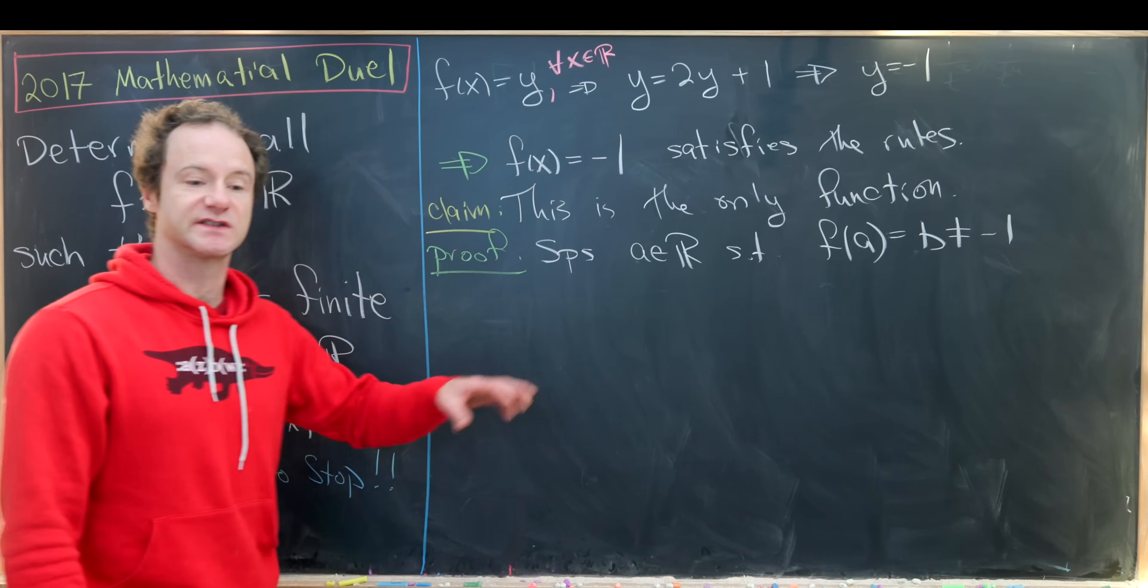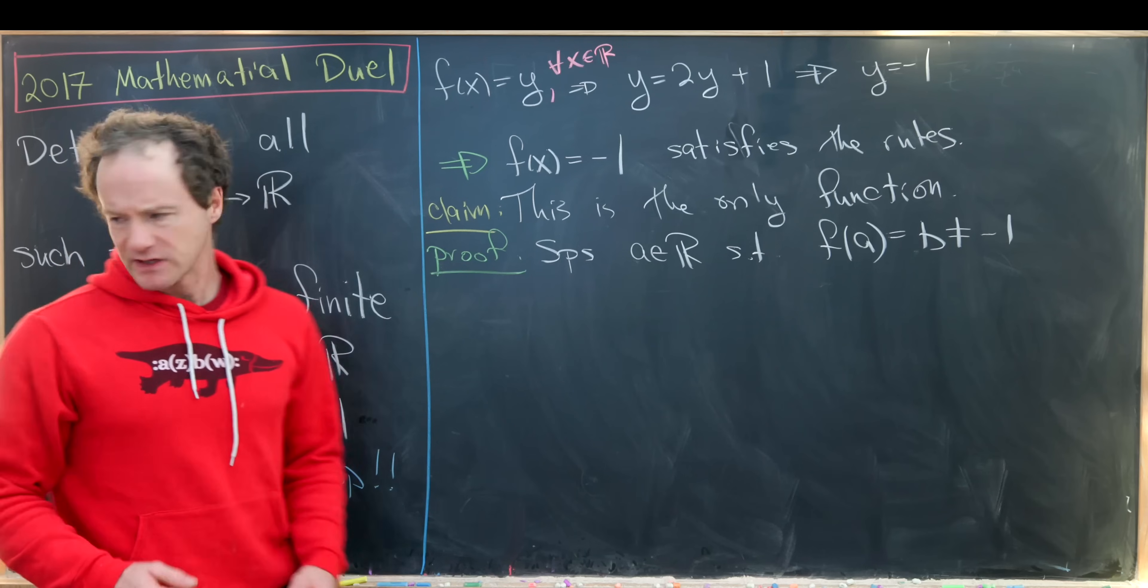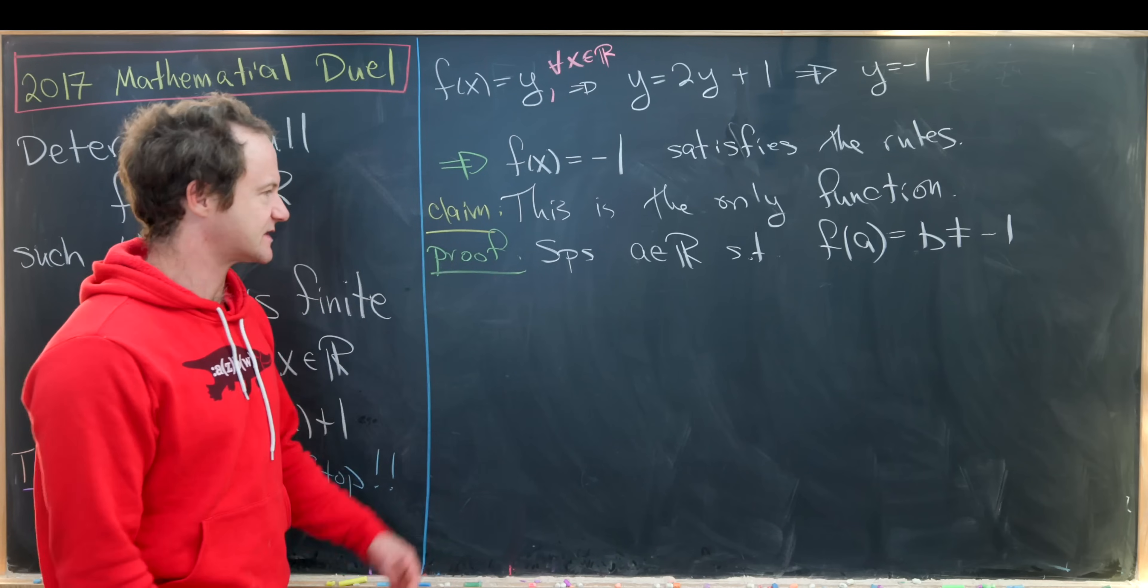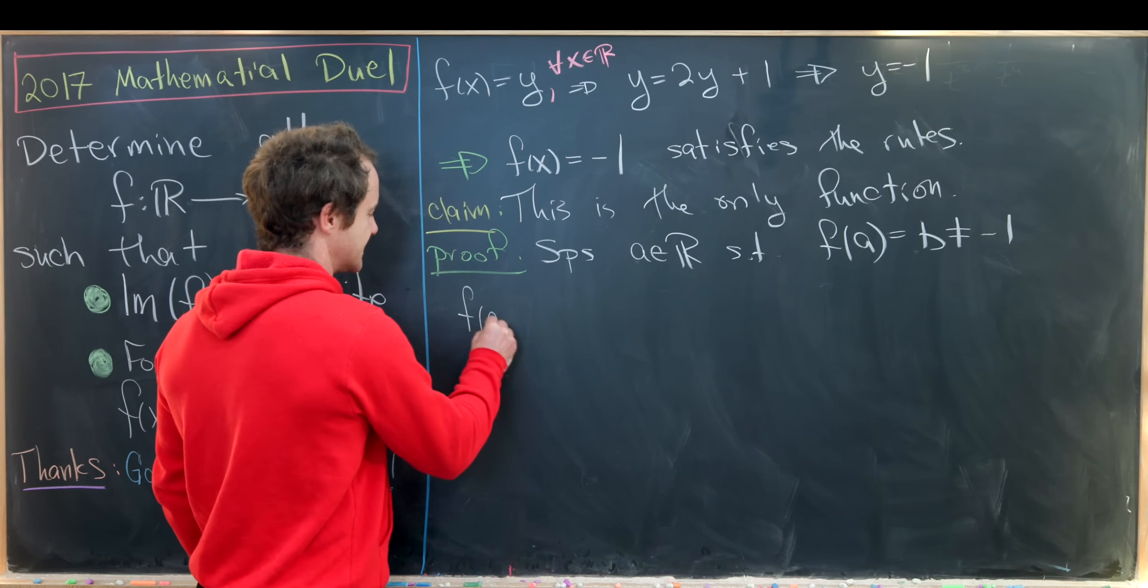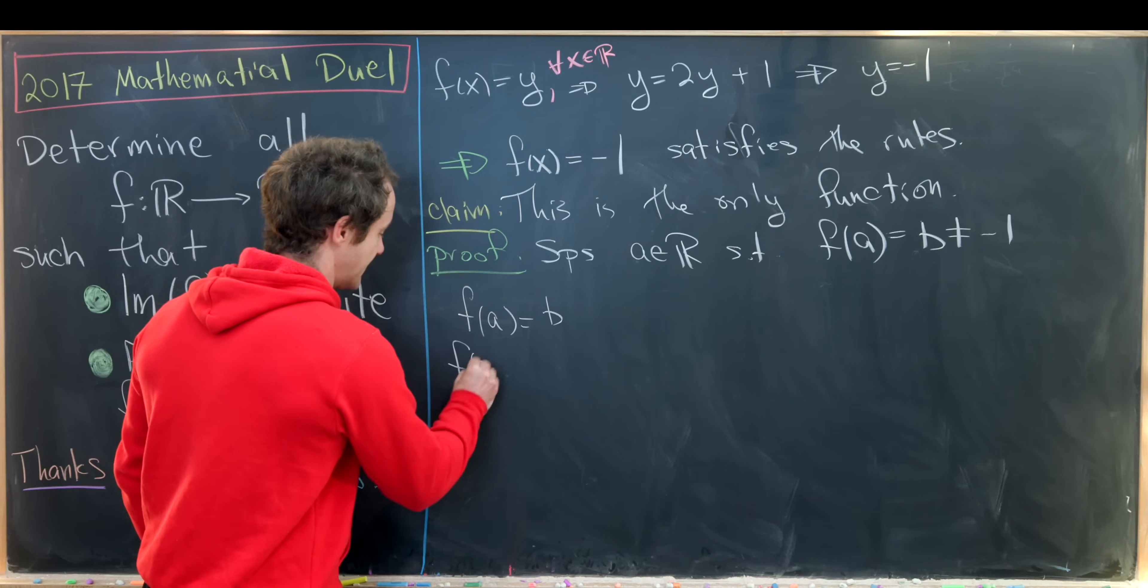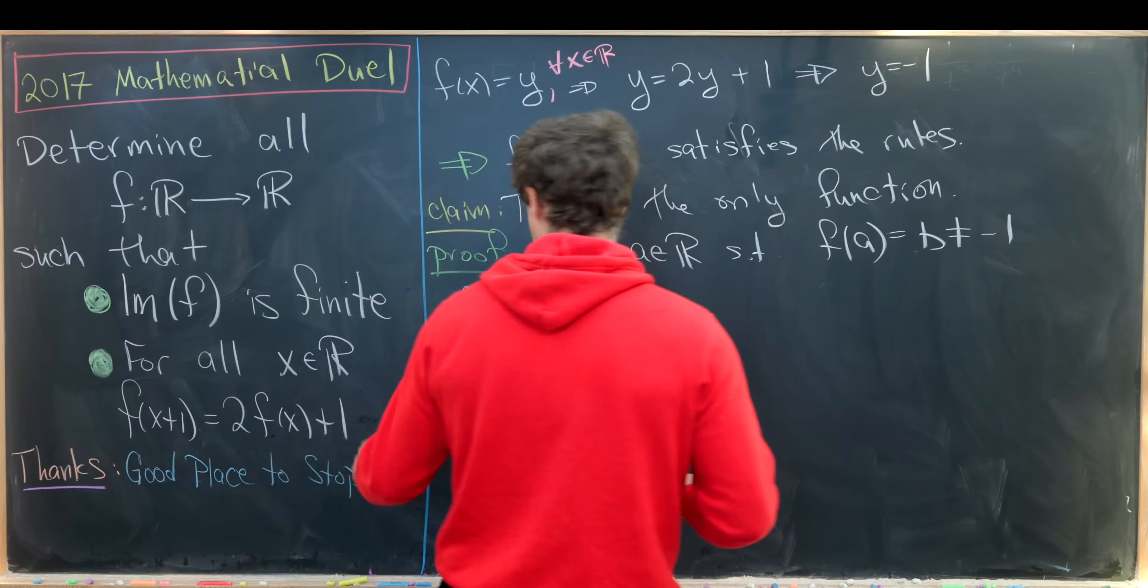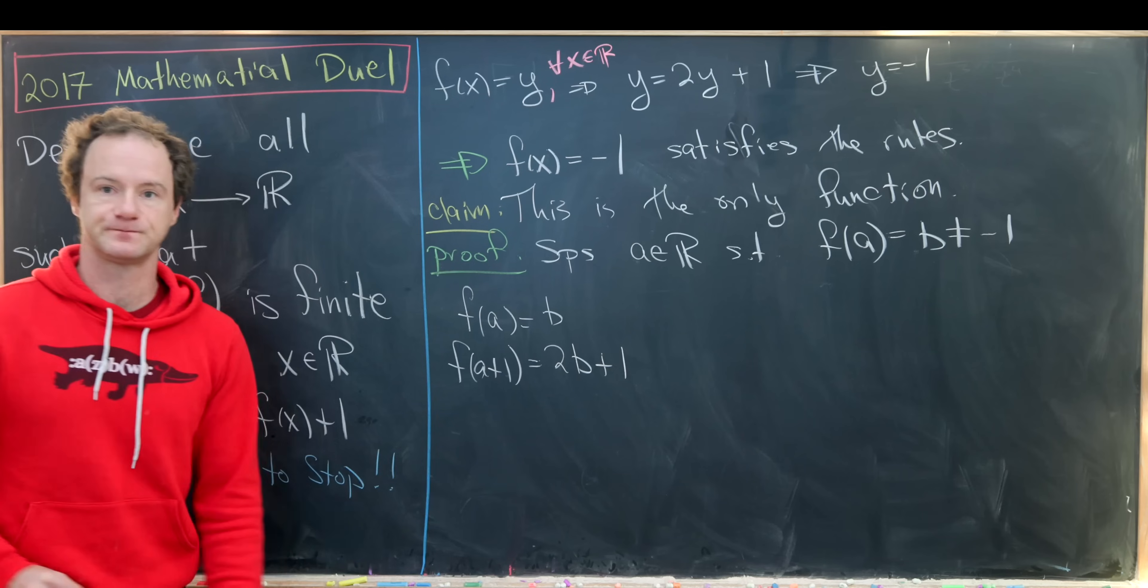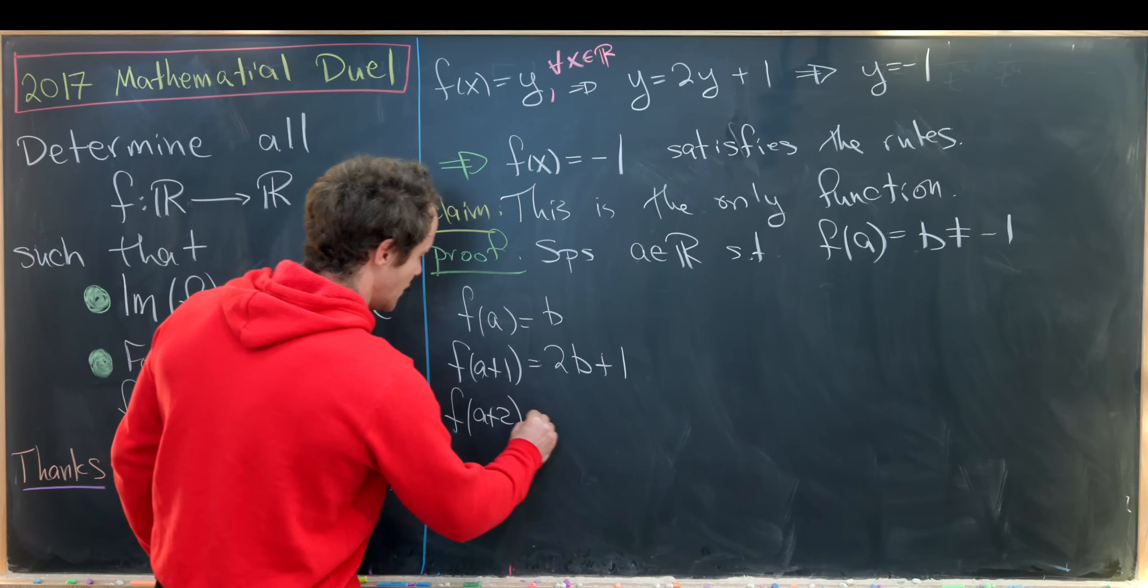to minus 1 somewhere. We're just calling that somewhere this point a. And now let's run through this rule a couple of times to see if we can get some structure built into these outputs. So I'll just copy this over. We have f(a) is b, then f(a+1) will be equal to 2 times f(a) plus 1, in other words 2b plus 1. Then f(a+2), well that's 2